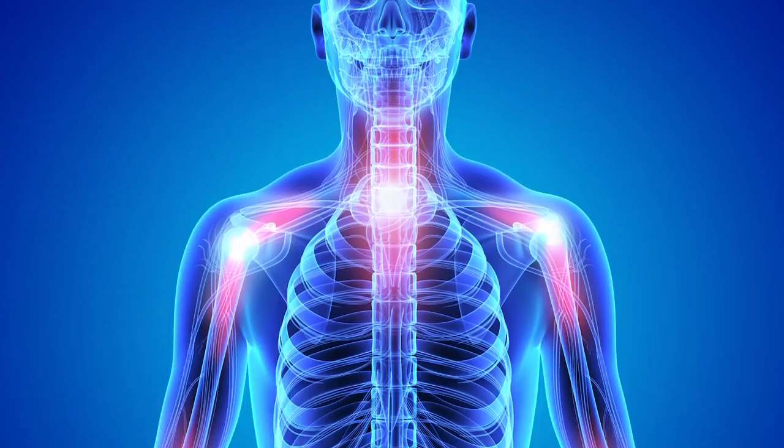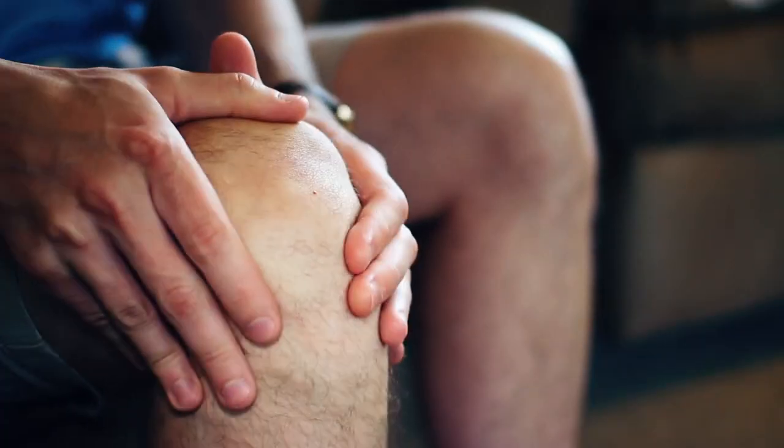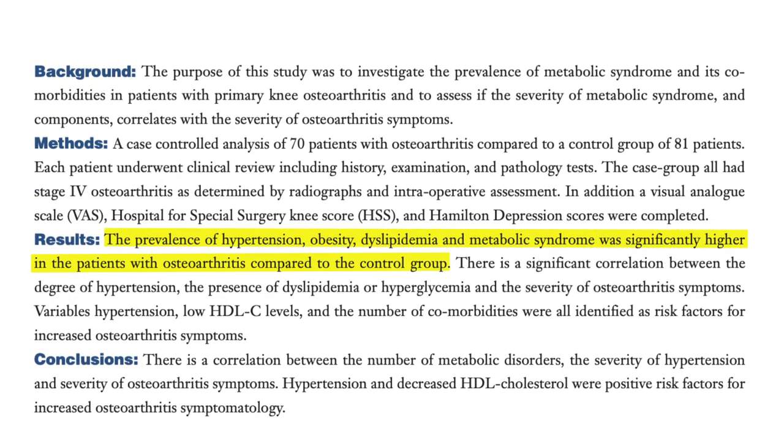Metabolic syndrome associated osteoarthritis is characterized by these symptoms and by low-grade systemic inflammation. Studies have shown that for patients with knee osteoarthritis, the symptoms of metabolic syndrome can cause an increase in severity and frequency of OA symptoms. By treating metabolic syndrome and those conditions, it can help with the prognosis of OA.